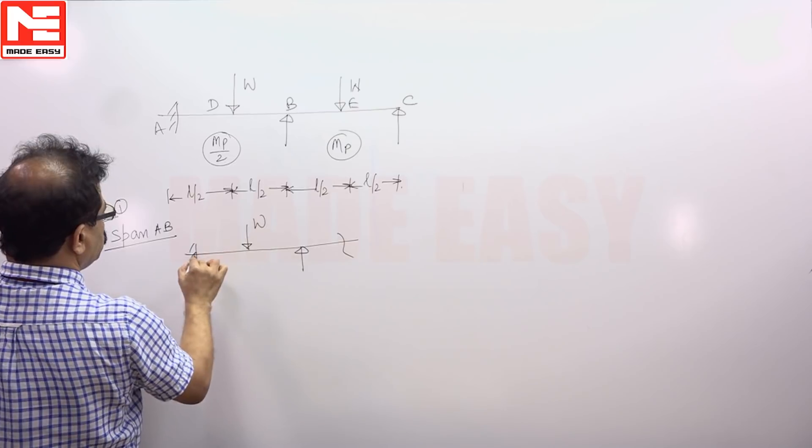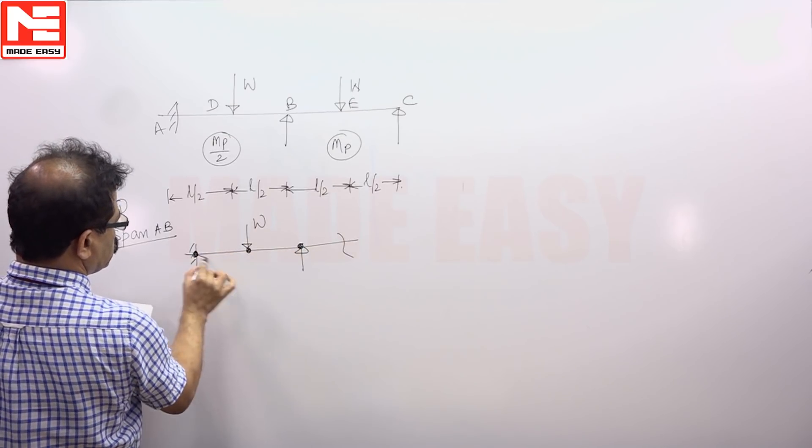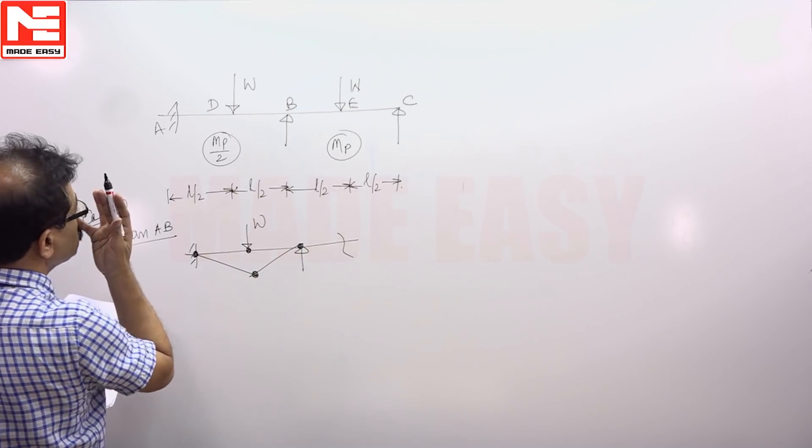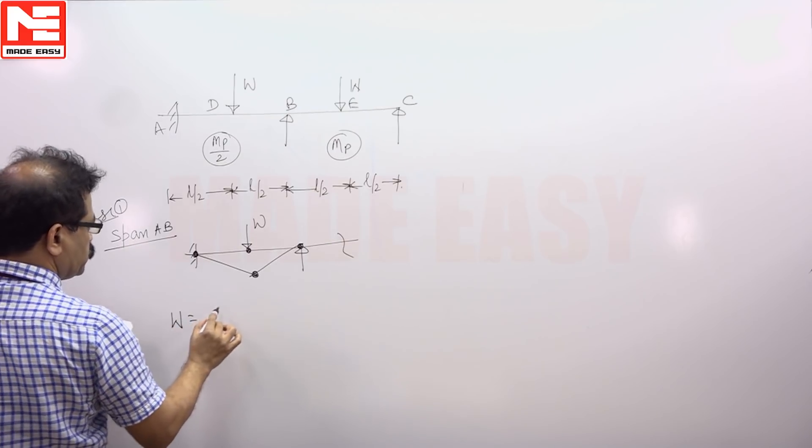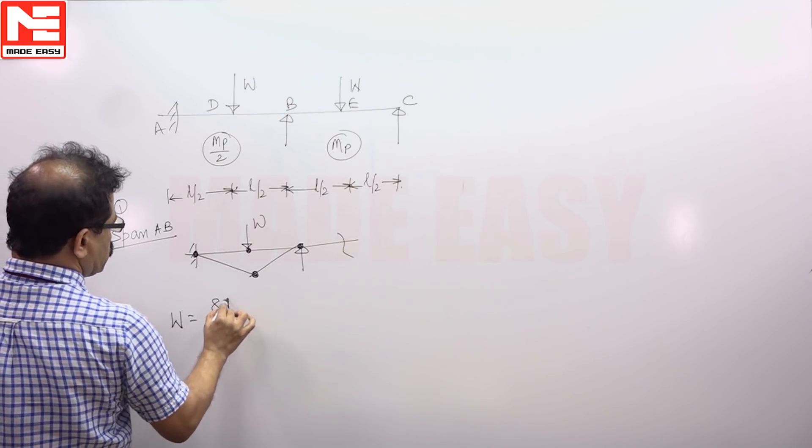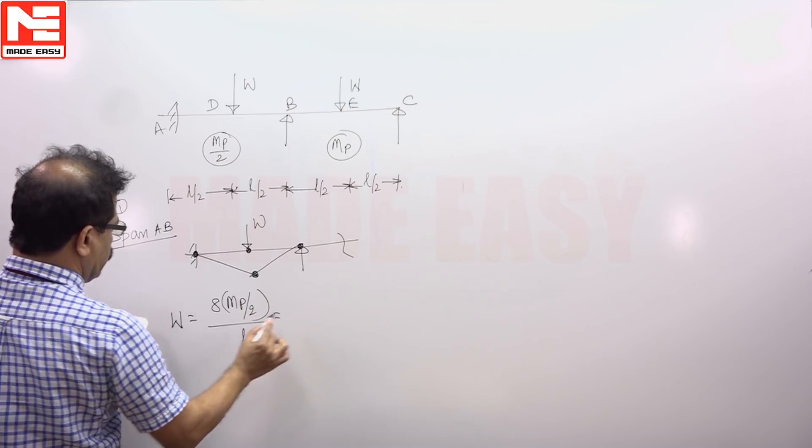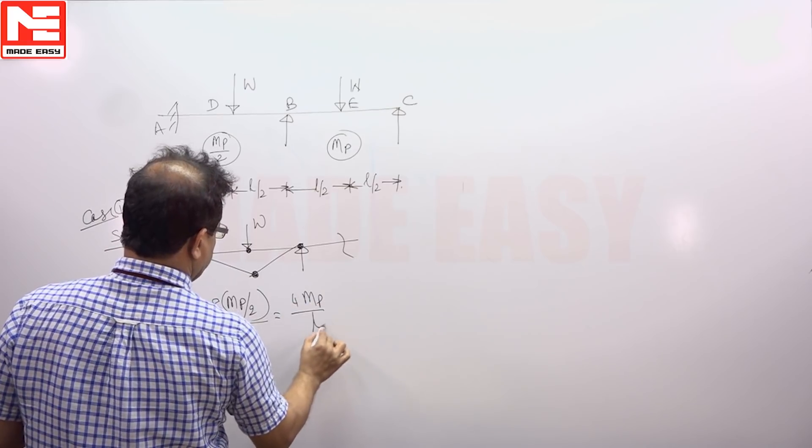This is a load W. Three hinges will develop here and here. This is the capacity. It is similar to fixed beam subjected to central point load. So it is W is 8 MP, MP is MP by 2, 8 MP by L. You will get 4 MP by L.